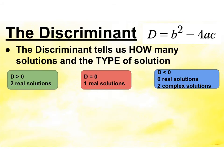The discriminant tells you how many solutions you have and also the type. I wrote the word 'real' — those are the numbers we know so far. We'll have 2 real, 1 real, or 0 real. But if we have 0 real solutions, then we're going to end up having 2 complex solutions. That will be another lesson for us.